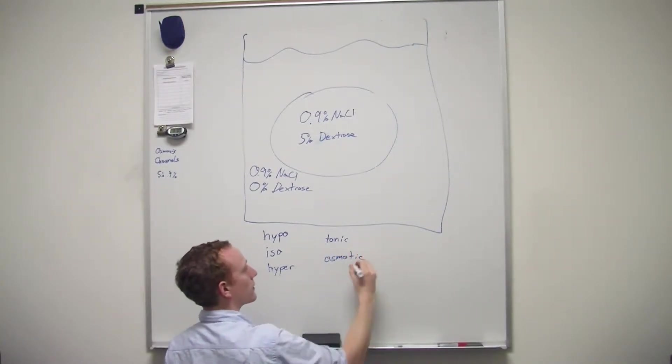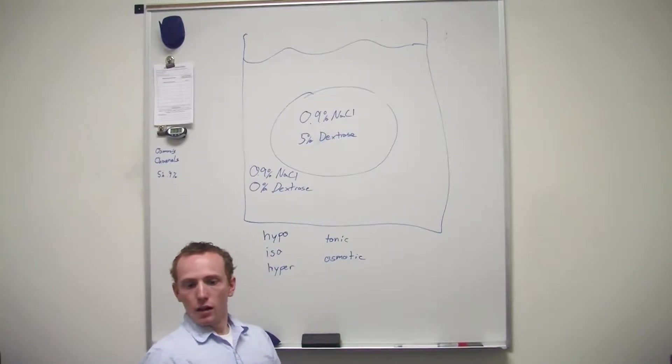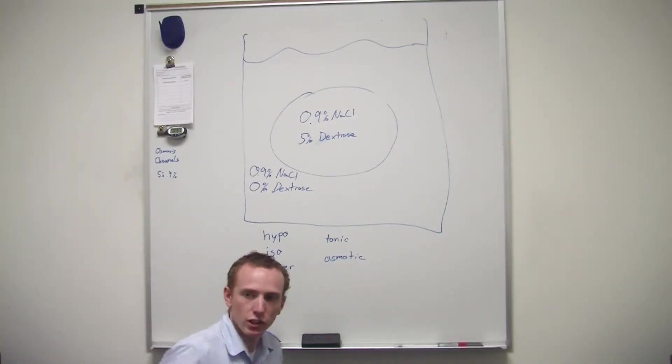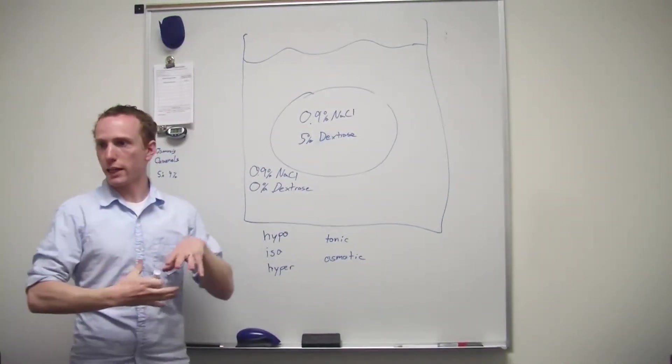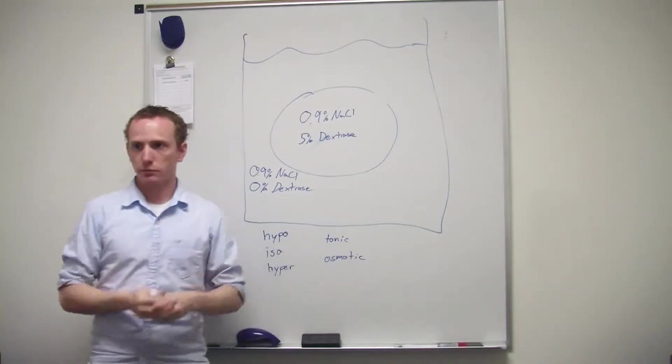So the tonicity is just the shape of the cell that we were talking about. You think it's going to swell up? Yeah, is it going to swell up, is it going to crenate, or is it going to stay the same?